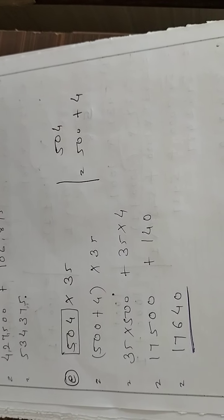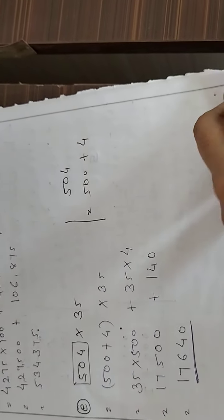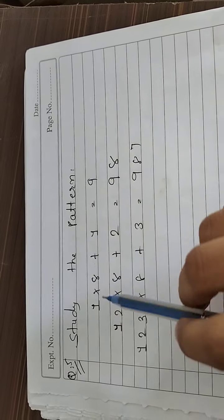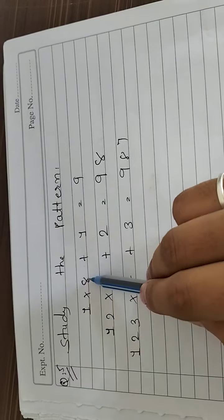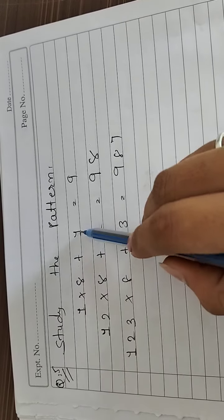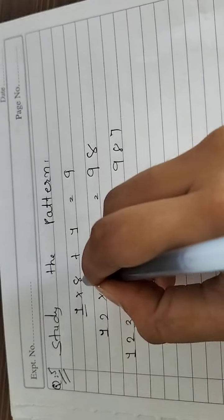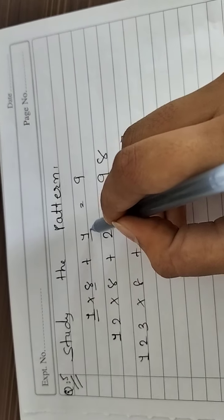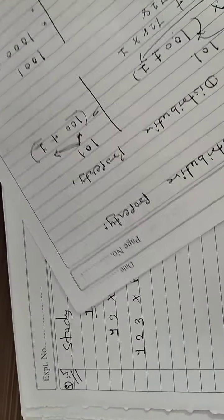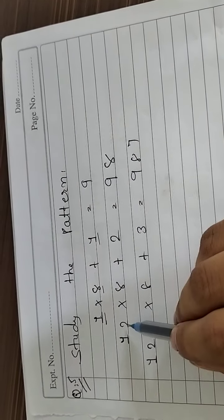I hope इसमें कोई doubt नहीं होगा — हमने 5 questions solve किए हैं तो यह complete हो जाना चाहिए। Question number 5: Study the pattern. देखो: 1 into 8, उसमें 1 add करेंगे तो answer मिलता है 9। 1 का multiplication 8 के साथ किया और फिर 1 add किया — answer 9।